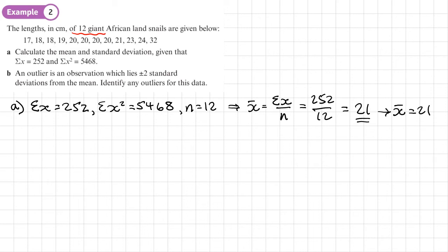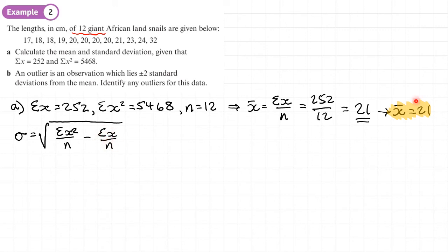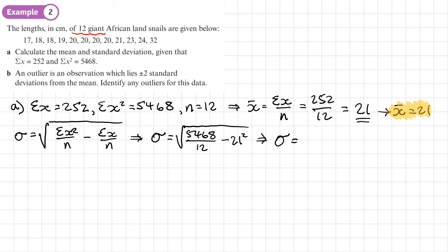Now we calculate the standard deviation. The formula is the positive square root of (sum of x squared over n) minus (sum of x over n) squared. Since the mean is 21, we substitute: square root of (5468 divided by 12) minus 21 squared. That gives a standard deviation of 3.8297, which to three significant figures is 3.83.